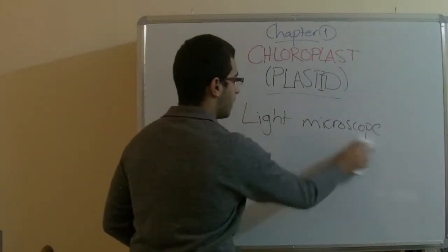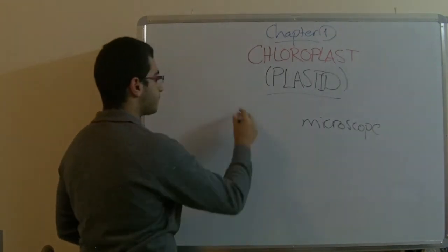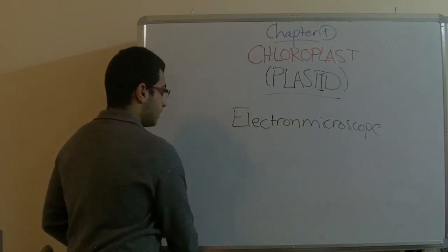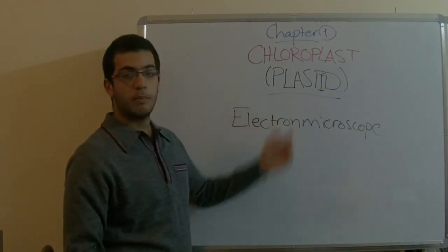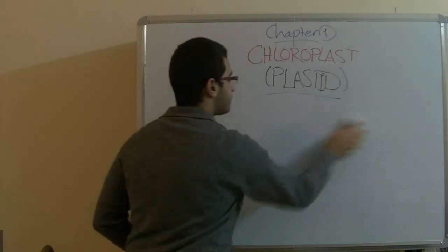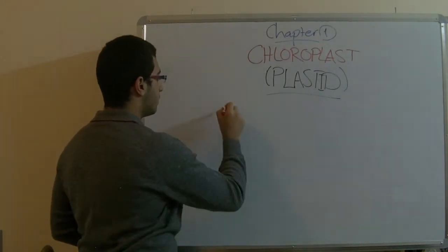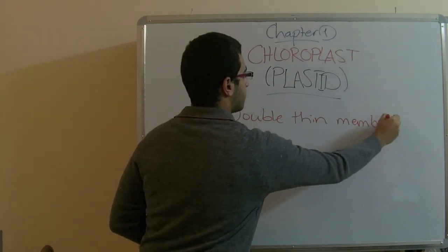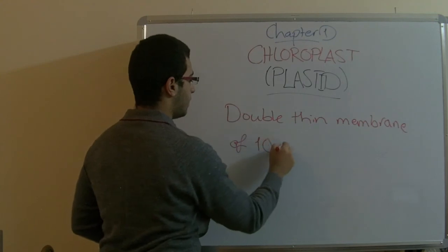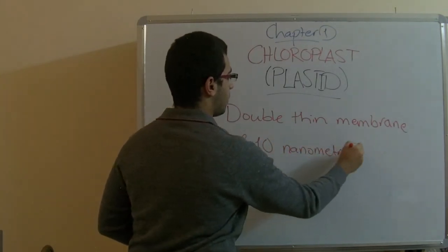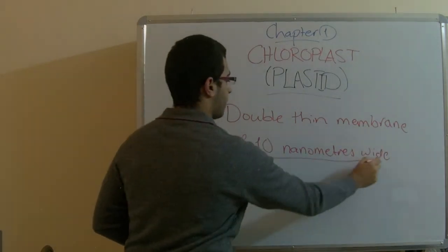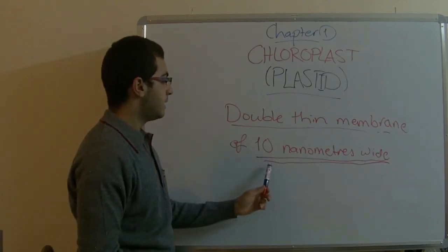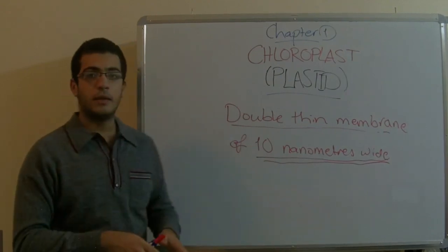But because the electron microscope is more accurate, they found that the chloroplast is enclosed in a double thin membrane of 10 nanometers. The width of the membrane that encloses the chloroplast is 10 nanometers wide.